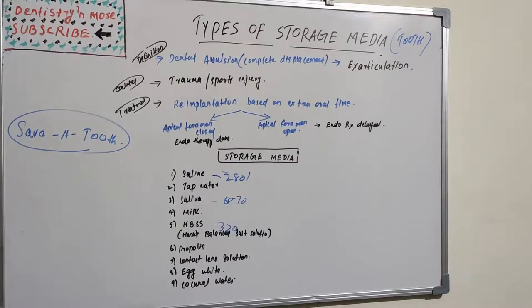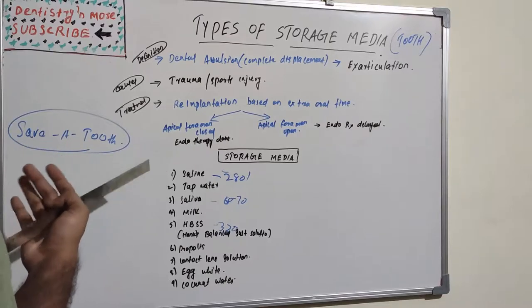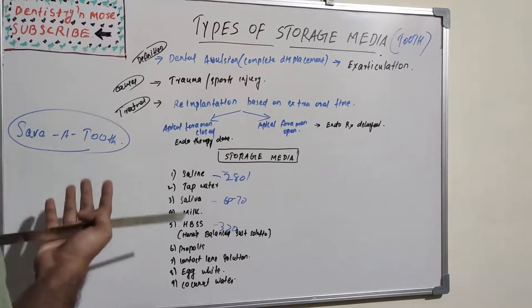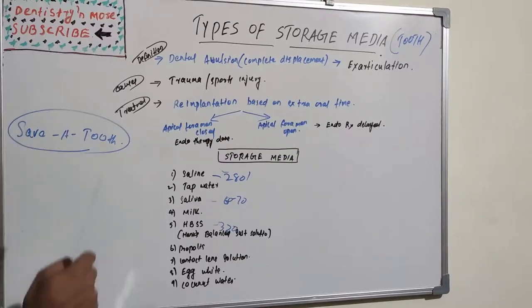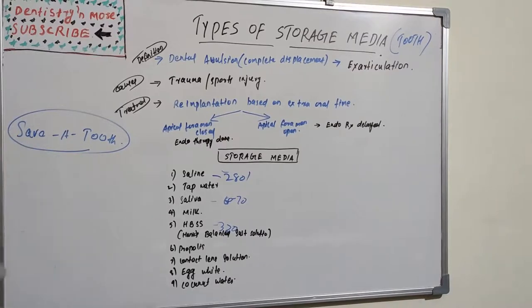The next one is propolis. Propolis is a sticky resin that seeps from the buds of bark of trees. It has antiseptic, antibacterial, antifungal, and antiviral properties. Contact lens solution also we can use because it has a buffered isotonic saline solution which can preserve the PDL cells. Egg white also can be used as a storage media.